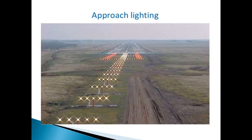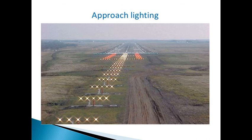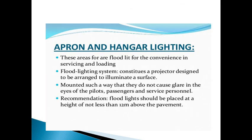The second type is approach lighting. In the figure you can see the runway and the approach area where the aircraft approaches towards the runway. This area is also lighted so that the pilot will not find any difficulty in aligning the aircraft, ensuring that it touches the ground exactly at the threshold point.